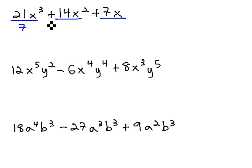Here, you see each term is divisible by 7, and each term has an x to the first in common because we use the lowest exponent.